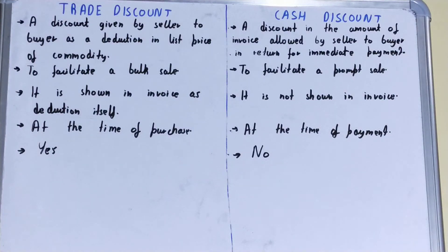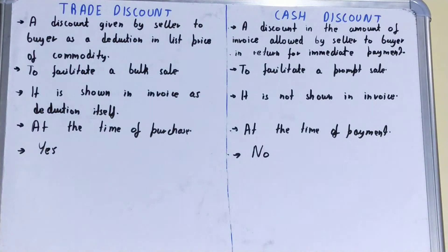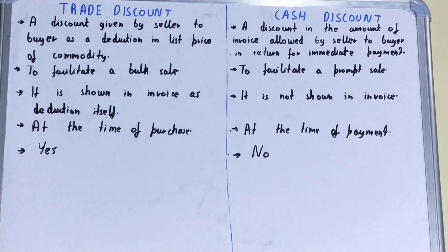Hello friends, in this video I'll be helping you with the difference between trade discount and cash discount. Trade discount is a discount given by the seller to the buyer as a deduction in the list price of the commodity. When the seller gives a discount on the list price or the invoice to the buyer, it is called a trade discount.